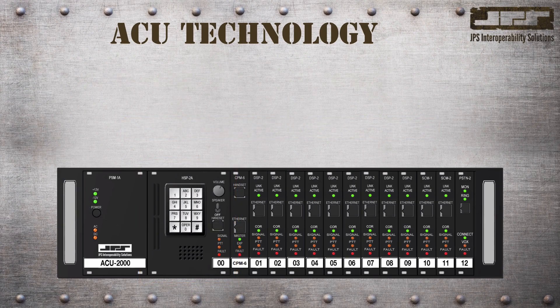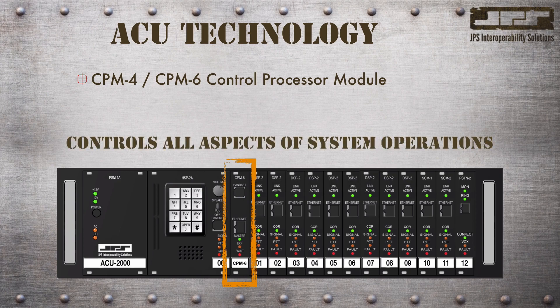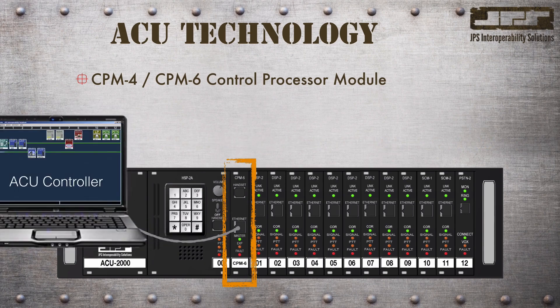Next is the CPM module, which stands for Control Processor Module. The CPM module manages other modules in the chassis and is sort of the brains of the gateway. It's also the primary module used for remote control and monitoring of the interoperable gateway. We often use controller applications such as the ACU controller and the Waze controller to remotely manage ACU gateways.